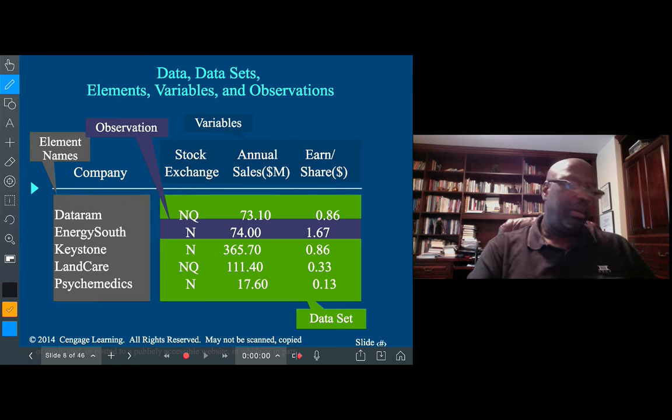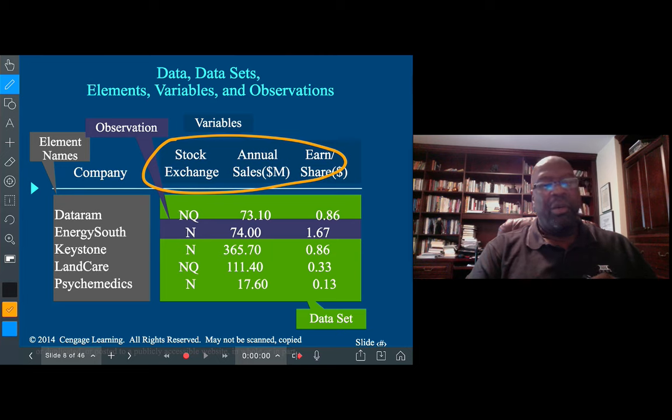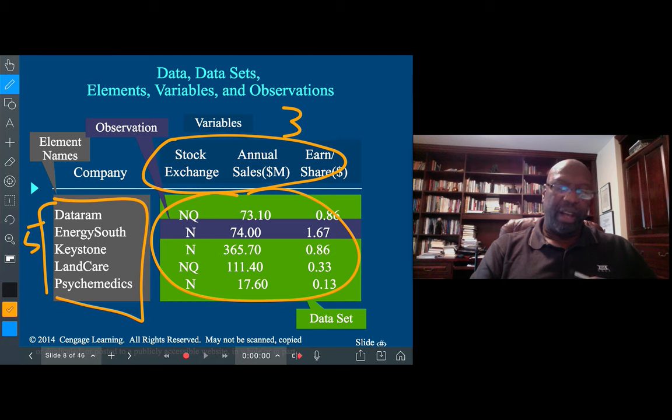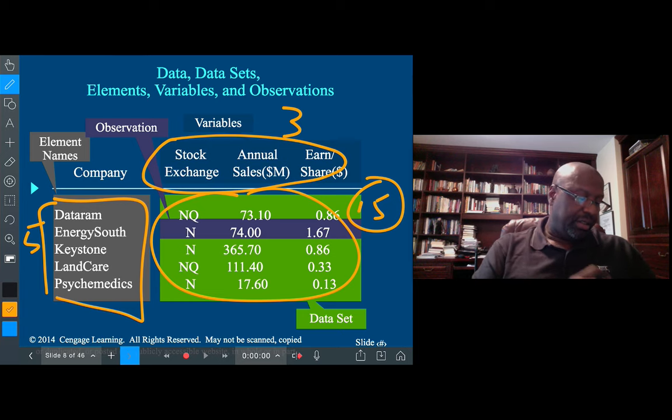Here's an example with some companies where we're looking at which stock exchange they're listed on, the annual sales, and the earnings per share. We have three variables and five elements, so three times five is a total of 15 values in that data set. All of those 15 values constitute the data set.